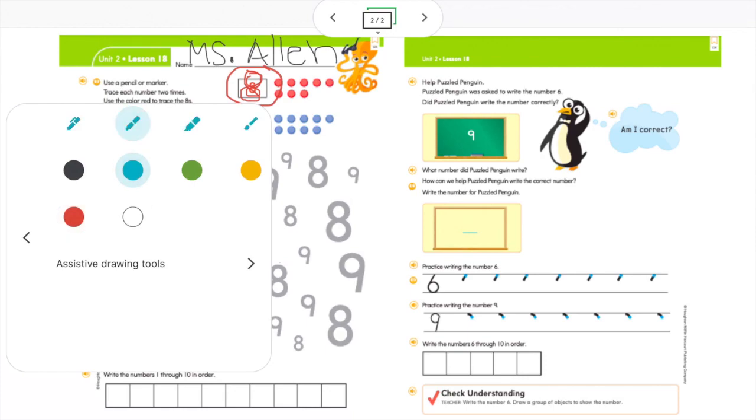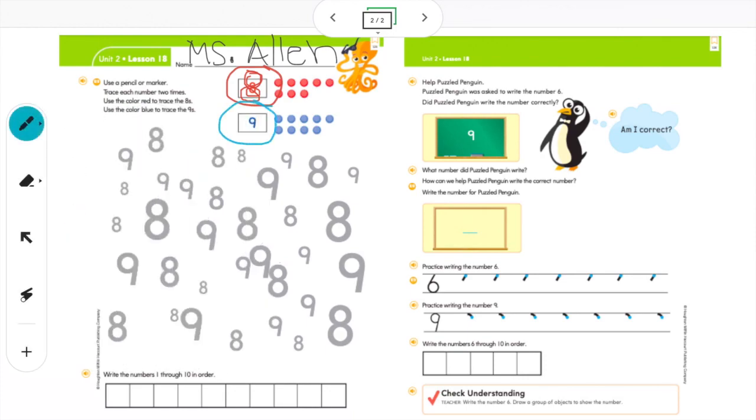Next you're going to grab your blue crayon. You're going to be tracing this number nine two times. Make a circle and a stick. Do it one more time. Make a circle and a stick. Perfect.